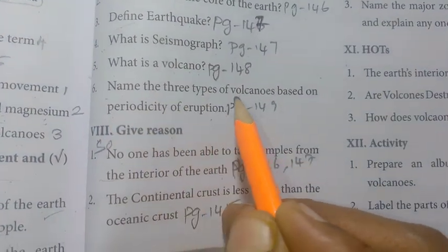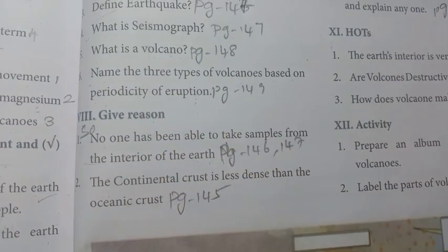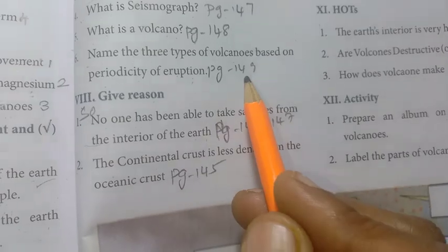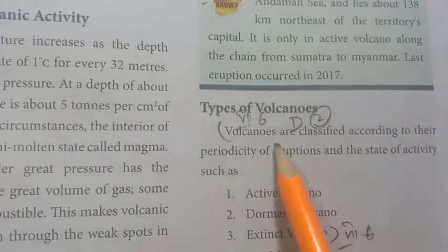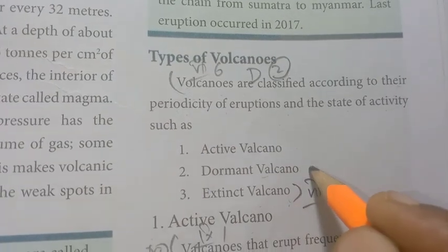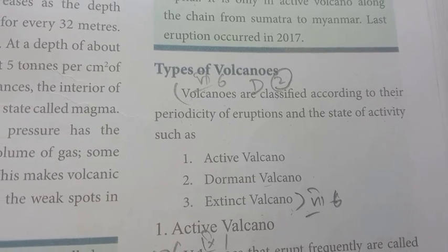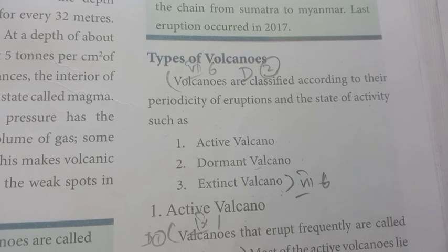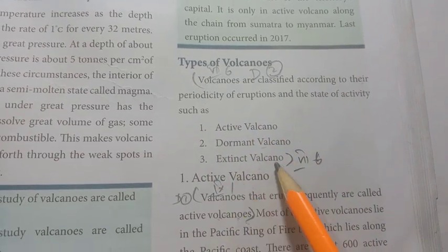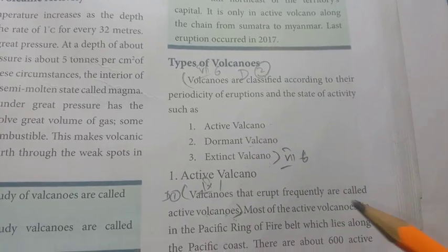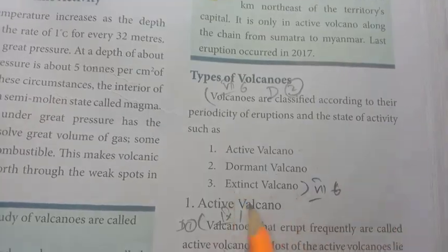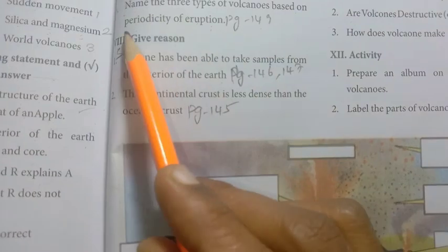Name the three types of volcanoes based on periodicity of eruption. According to the periodicity of eruptions and the state of activity, the three types are: active volcano, dormant volcano, and extinct volcano.